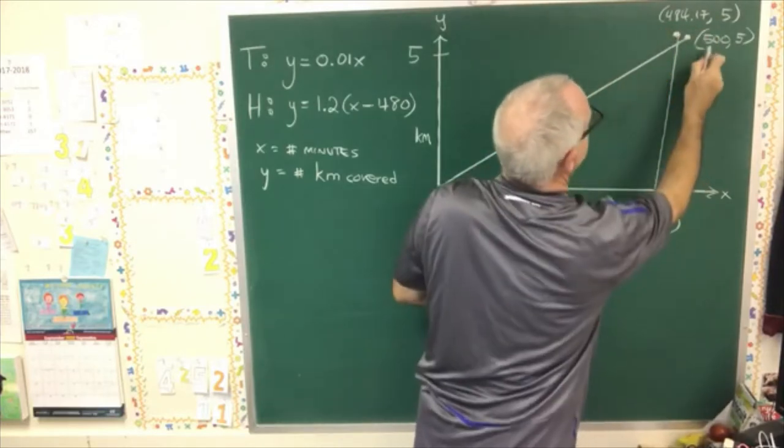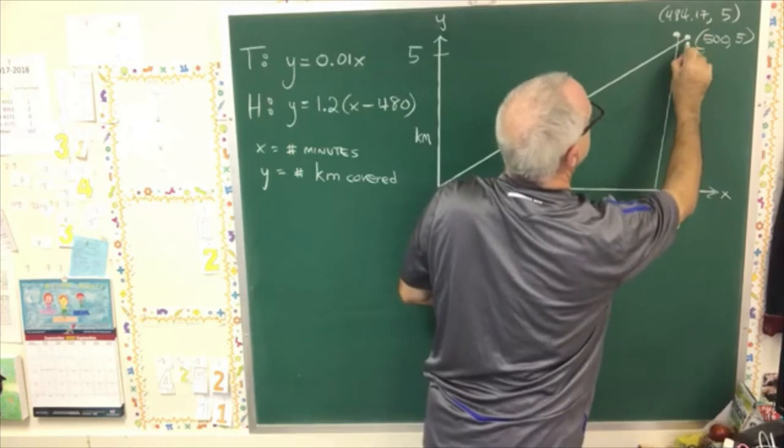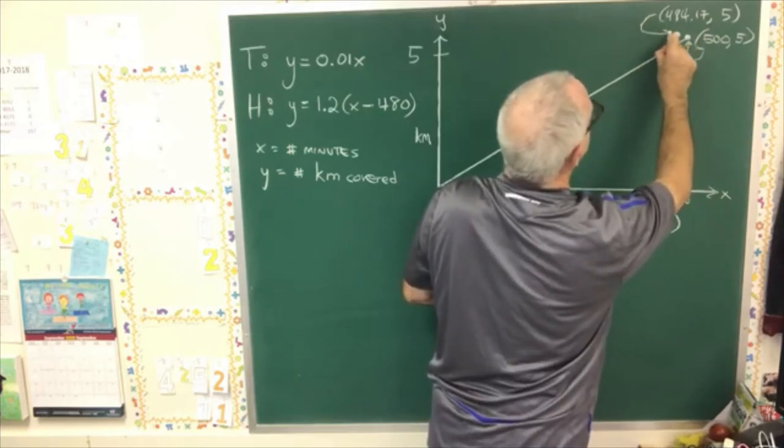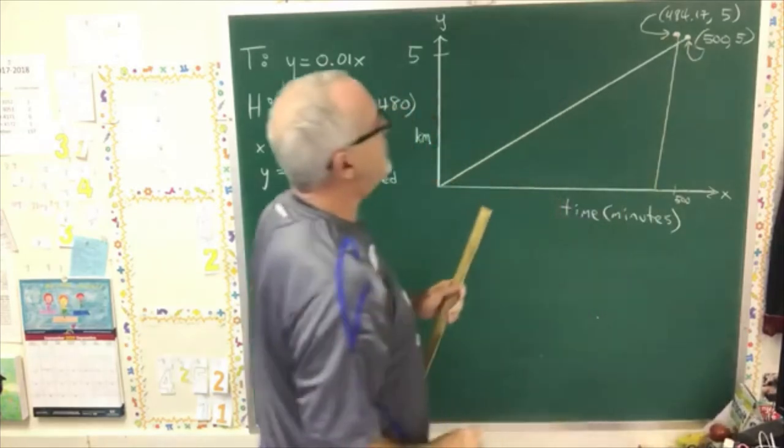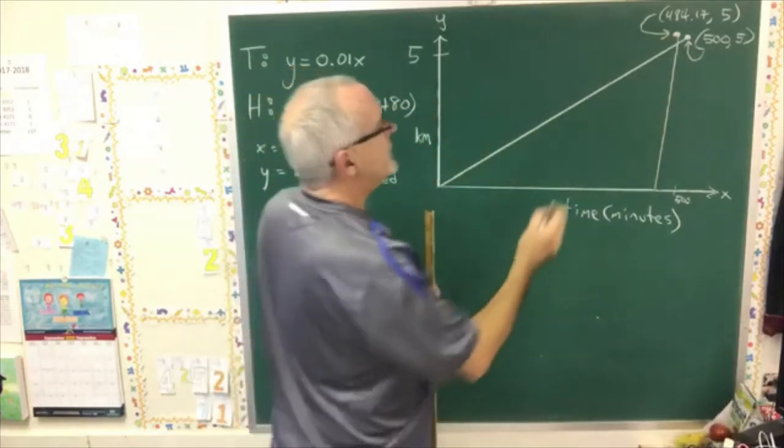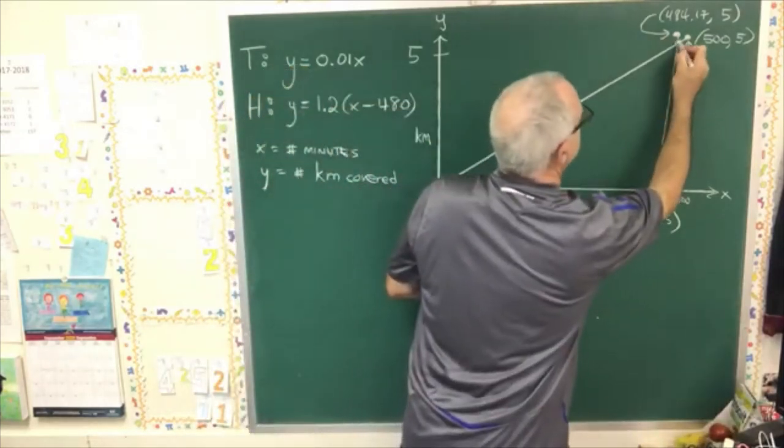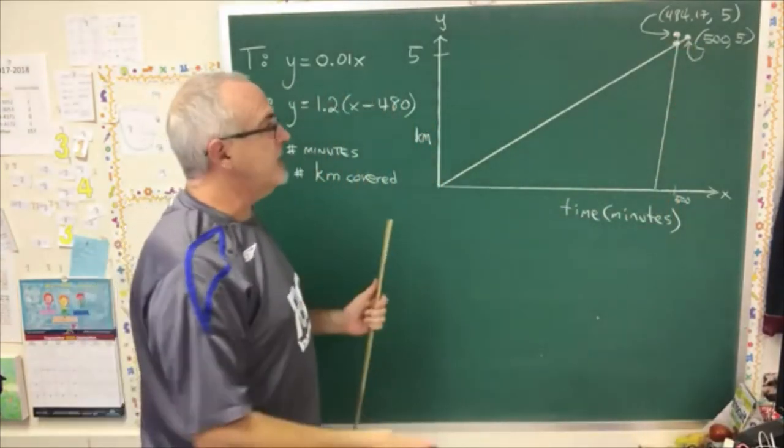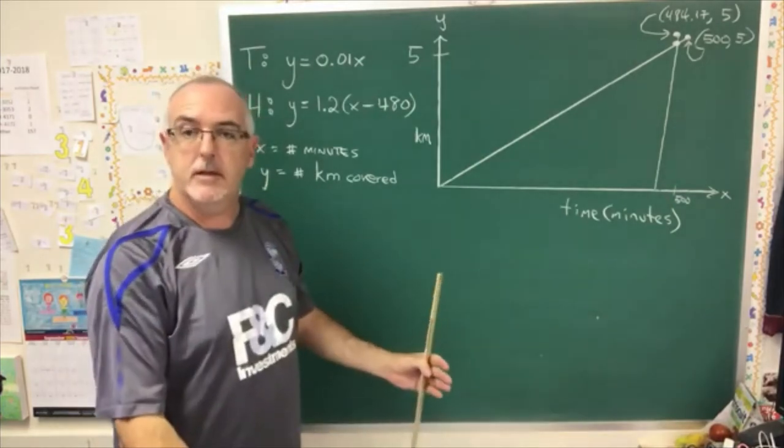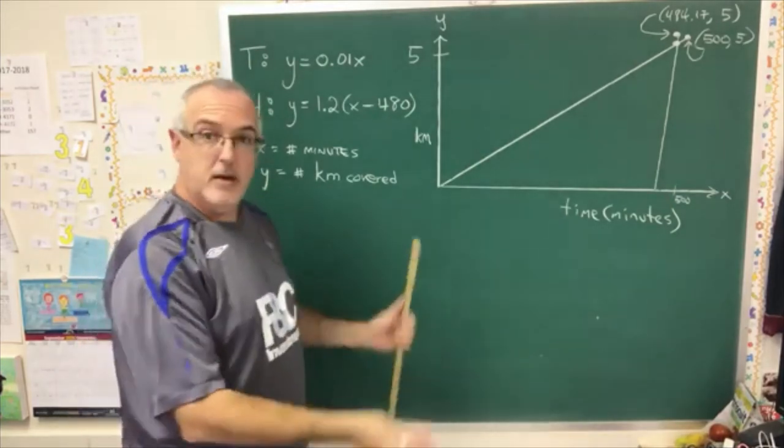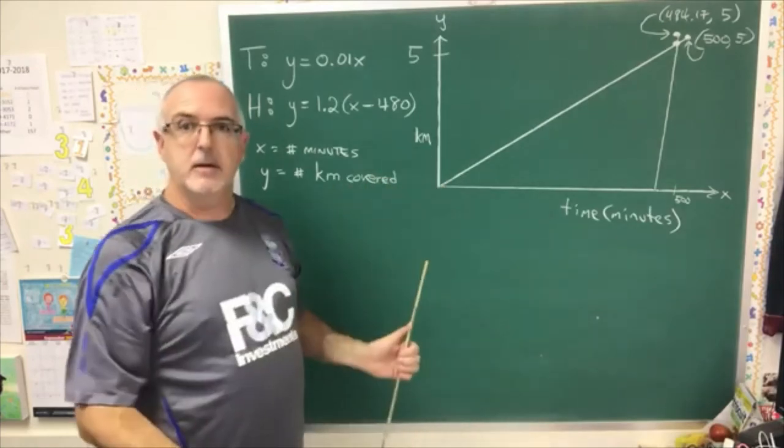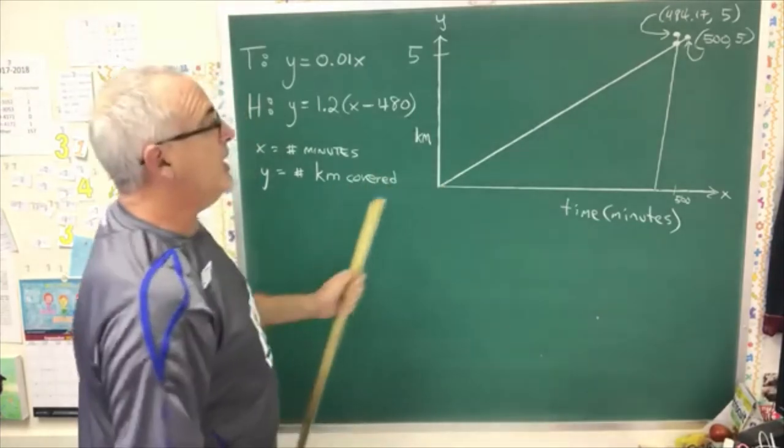So, therefore, the tortoise's finish is shown here. And the hare's finish is shown there. Now, there's also the point of intersection. And the question can ask for that. And if the question asks, after how many minutes, for instance, did the hare pass the tortoise on the way to the finish line, you would have to do comparison to answer that correctly with algebra.